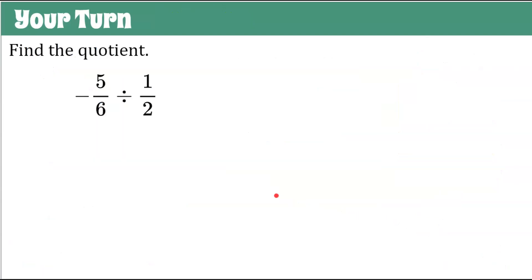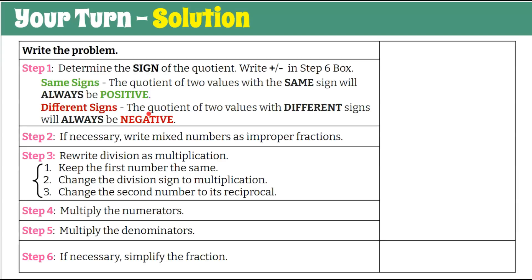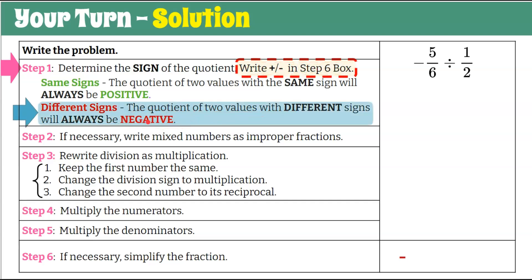Here's another one: find the quotient of negative five-sixths divided by one-half. Go ahead and pause, then come back when you're ready. Welcome back. Step one: determine the sign of the quotient. We have a negative divided by a positive — different signs — so the quotient is negative. Record that negative sign in the step six box. Step two: if necessary, write mixed numbers as improper fractions — neither value is a mixed number, so we go on to step three.